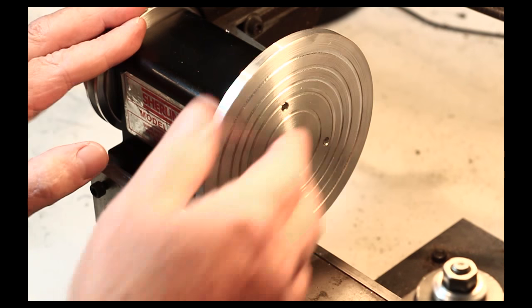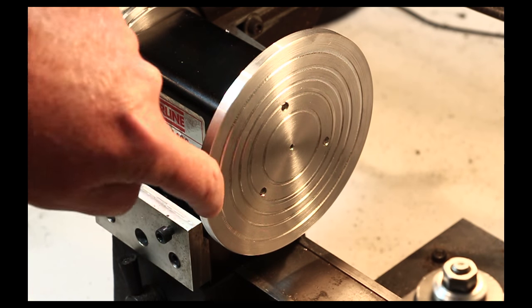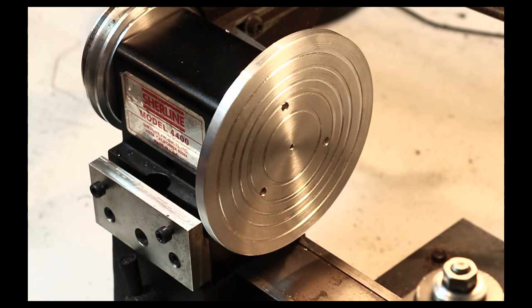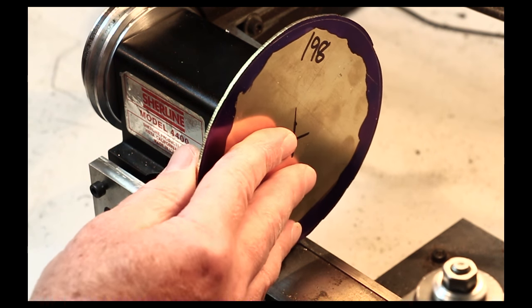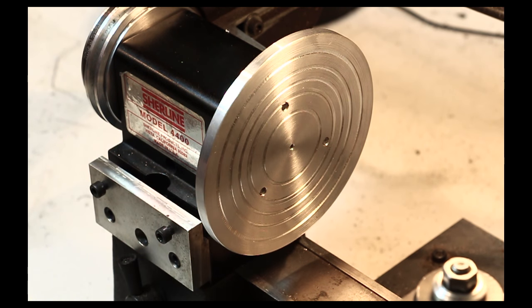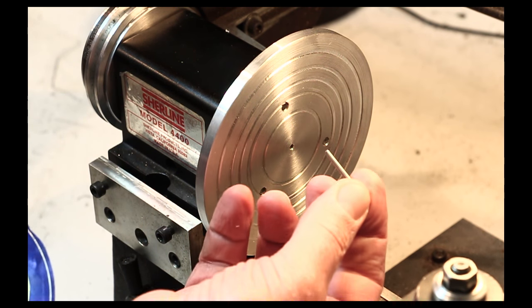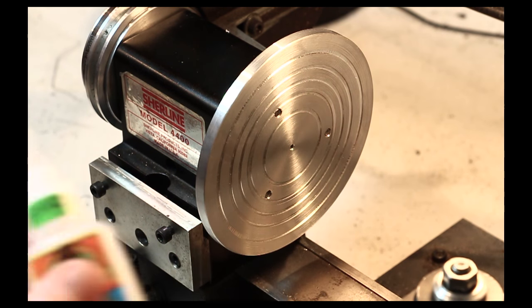Then, using super glue, you can glue the gears right to the arbor. And later, when you're finished, you can apply heat with a torch and that loosens the glue and the gear comes off.